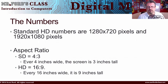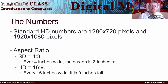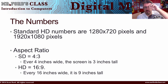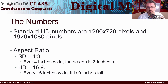Looking at SD and HD numbers: standard HD resolutions you might hear of are 1280 by 720 pixels, as well as 1920 by 1080 — how many pixels go across and how many go down. The more pixels we can fit in, the higher the resolution becomes.